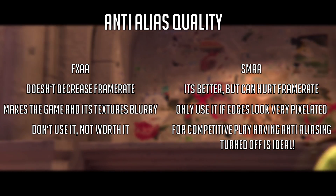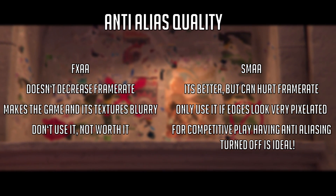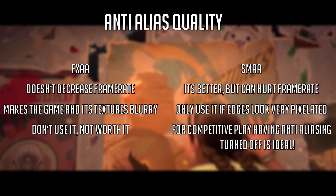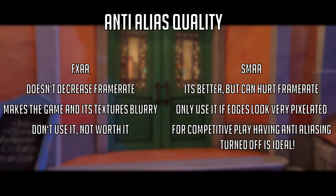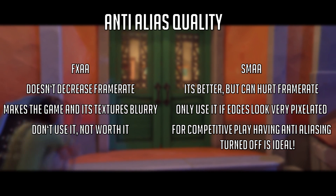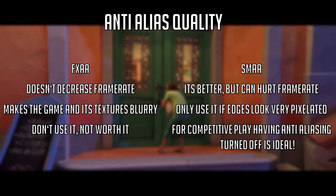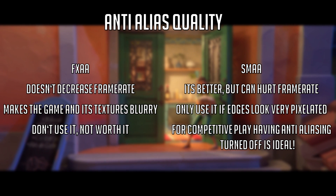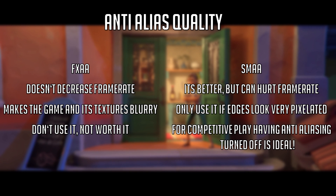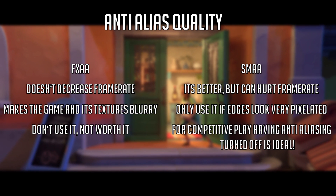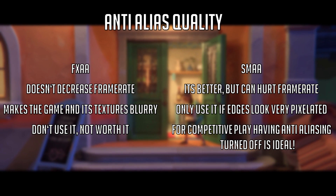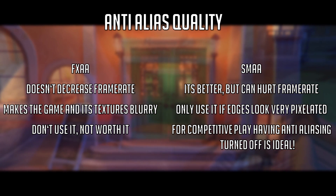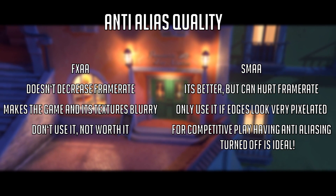Anti-aliasing quality. You have the choice between FXAA and SMAA. FXAA doesn't decrease your frame rate usually. However, it makes the game and its textures very blurry — in my opinion you shouldn't use it; it just hinders your vision. SMAA on the other hand is better, however it can hurt your frame rate. Only use it if edges look very pixelated. For competitive play, having anti-aliasing turned off is ideal.